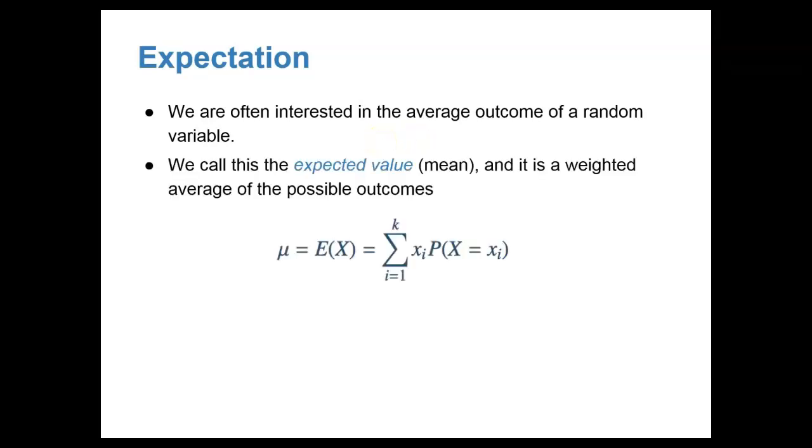So in the probability distribution world, instead of talking about a mean value, we instead talk about what's called the expectation value, or the expected value. We are often interested in the average outcome of a random variable, which means we are looking for a mean or average value, and we call that the expected value, and it is a weighted average of the possible outcomes.